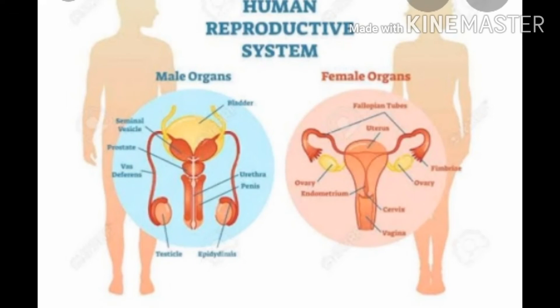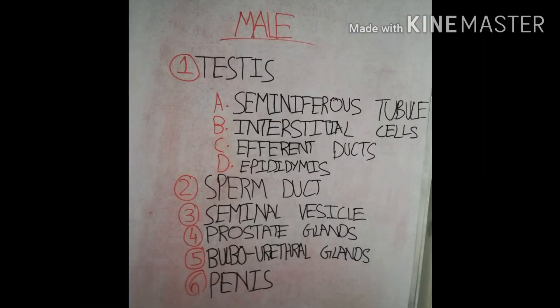Let's study the male reproductive system. This system has seven main organs: testes, sperm duct, bulbo-urethral glands, seminal vesicles, prostate glands, penis, and also urethra. If you want to score high marks in ICSE class 10 biology, you should know every single organ's shape, location and function in every single lesson.